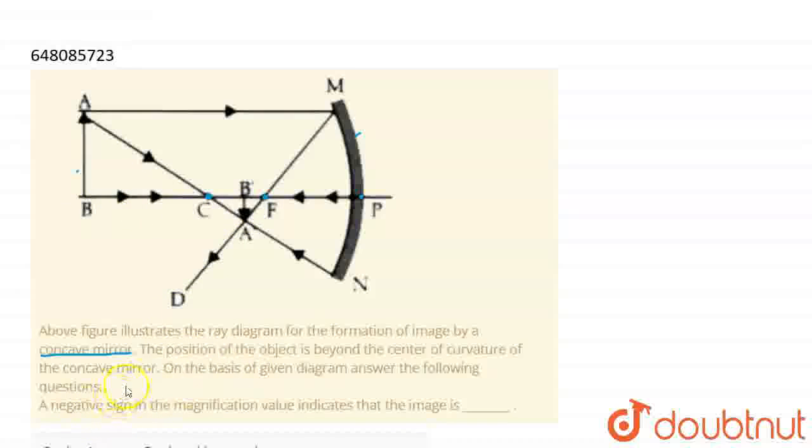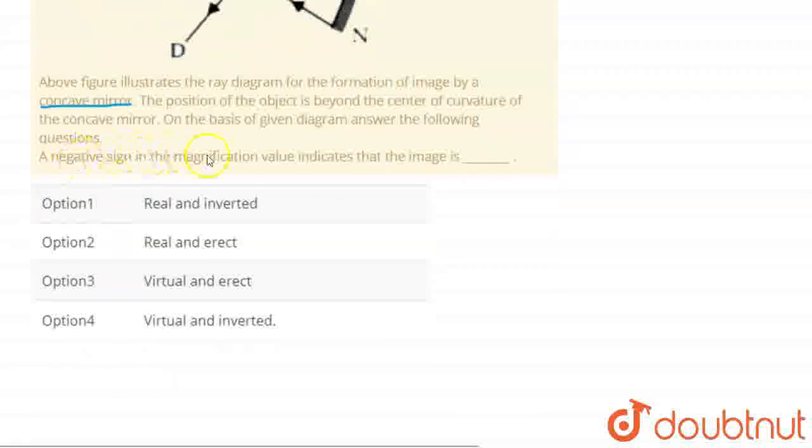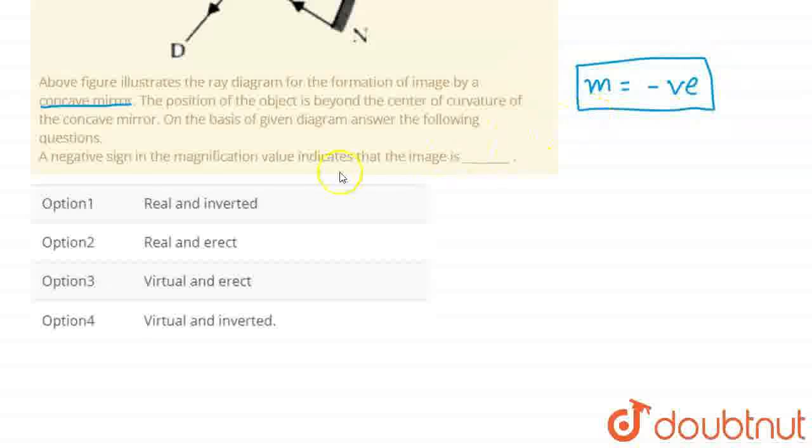We will answer the question: A negative sign of the magnification value indicates that the image is. The magnification is negative.